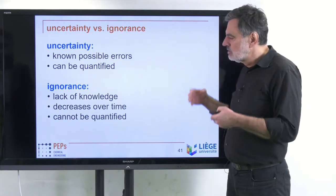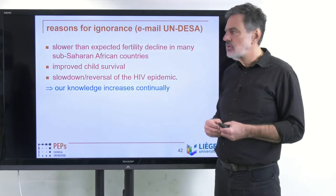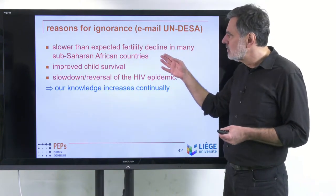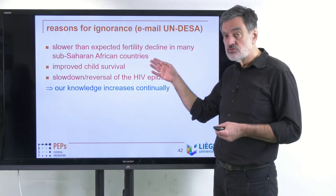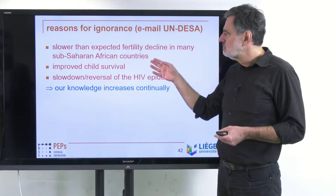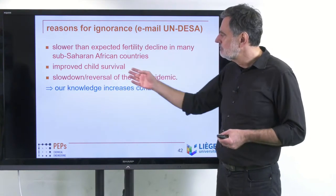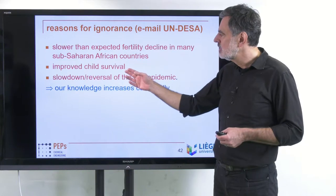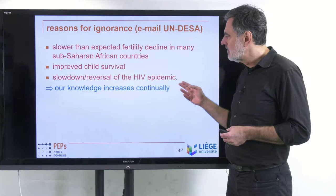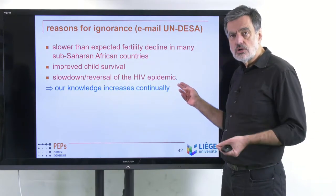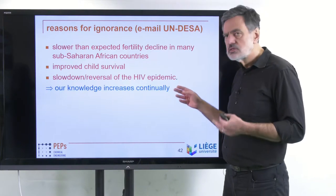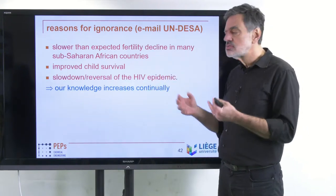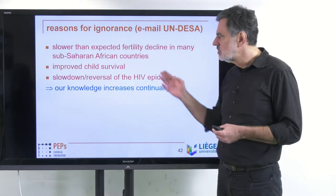So what changed in the past that led to this upward shift? There are three main things. First, a slower than expected fertility decline in many sub-Saharan African countries — fertility was always a little bit higher than estimated. Second, improved child survival worldwide. And third, a slowdown or reversal of the HIV epidemic and better access to treatment, so that infected people can have children and reproduce — and global population increases due to that a little bit more than expected.